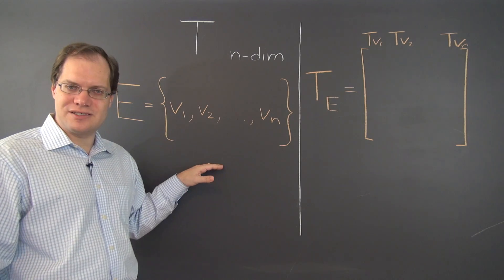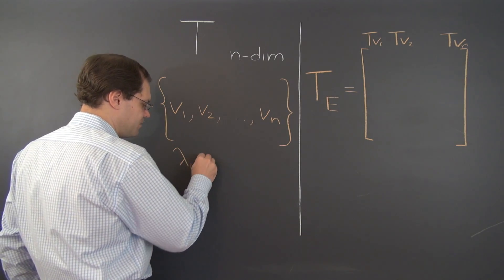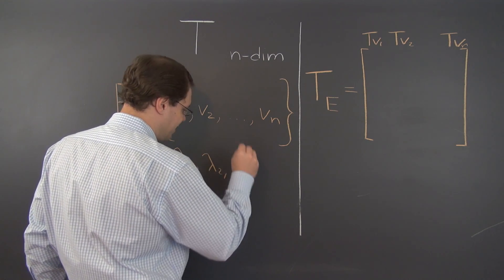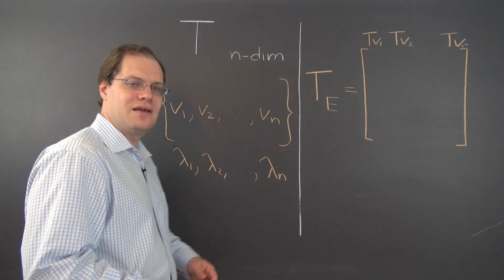Now corresponding to these eigenvectors are the n eigenvalues, lambda 1, lambda 2, dot dot dot, lambda n. These are the n eigenvalues.